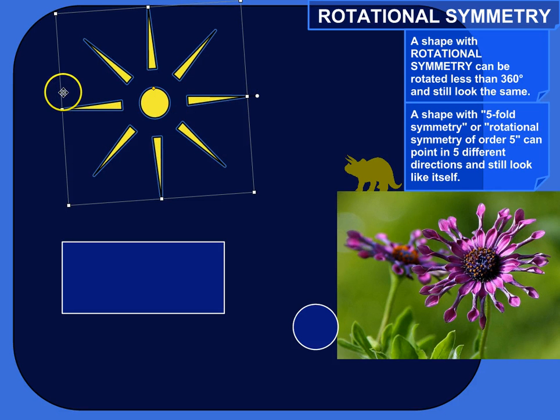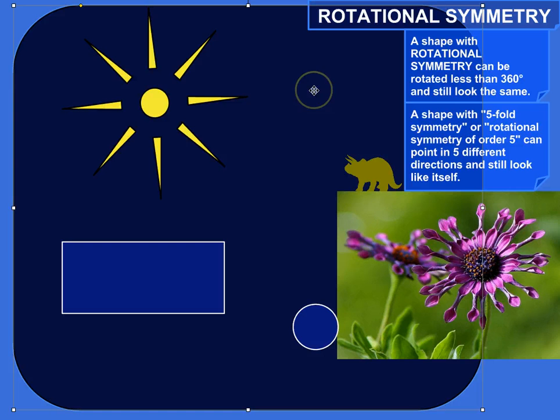It's exactly lined up with itself. I did a 180 degree rotation, and then I can get back to the starting point. Yep, so this would have two-fold symmetry or rotational symmetry of order 2. There's two different directions it can point, and it's lined up.